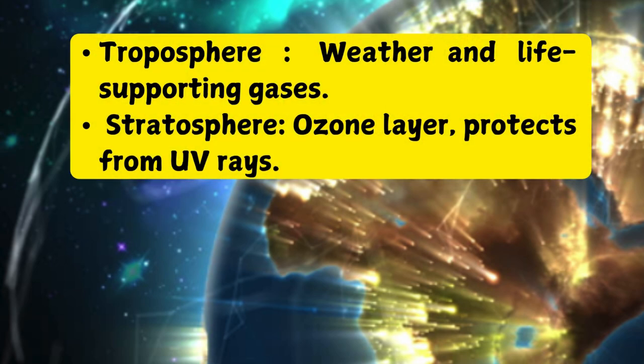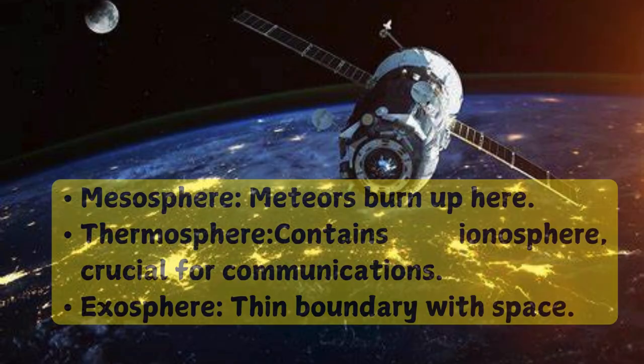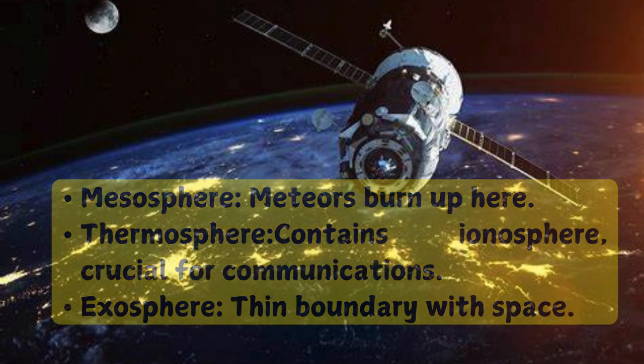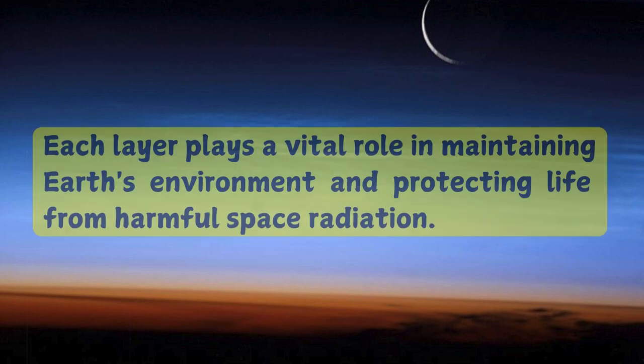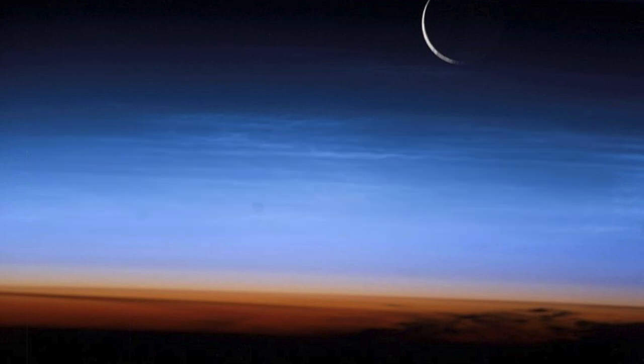Recap: Troposphere — weather and life-supporting gases. Stratosphere — ozone layer protects from UV rays. Mesosphere — meteors burn up here. Thermosphere — contains the ionosphere, crucial for communications. Exosphere — thin boundary with space. Each layer plays a vital role in maintaining Earth's environment and protecting life from harmful space radiation.